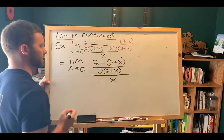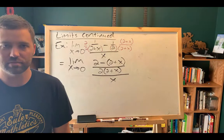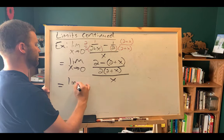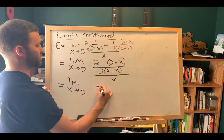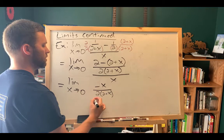So what I end up with is I have the limit as x approaches zero of two minus two plus x, this is all in the numerator, divided by the denominator, which is two times two plus x. That was our common denominator, all divided by x. So we have a complex fraction, not particularly beautiful to deal with here, but let's keep simplifying and see what happens.